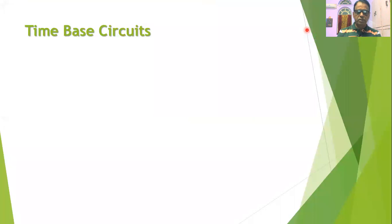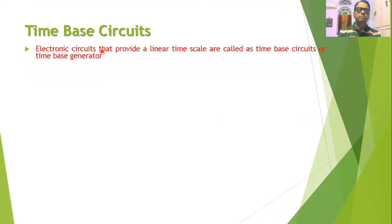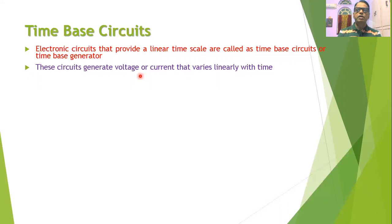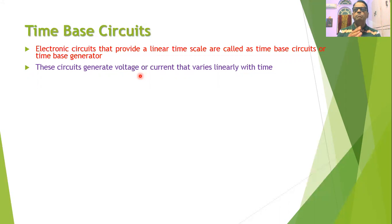So let us start the session with the question: what do we mean by time-based circuits or time-based generators? Time-based circuits are those circuits that can generate a linear time scale, and such circuits are called time-based circuits or time-based generators. These circuits generate a voltage or current that varies linearly with time. Whenever we plot the waveform of such voltage, you will find that as time goes on increasing the voltage also goes on increasing.